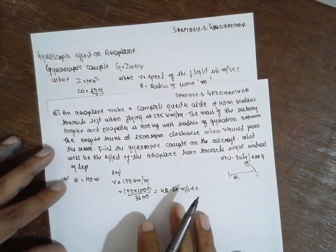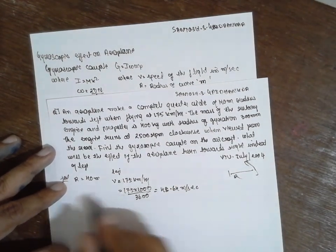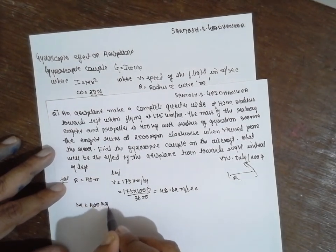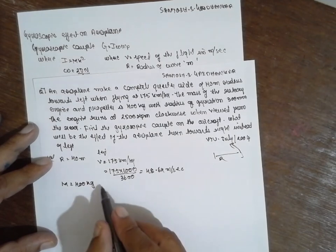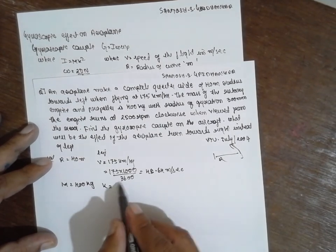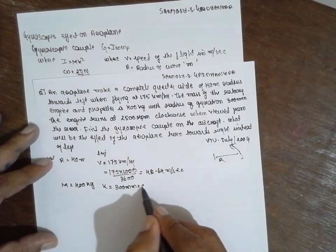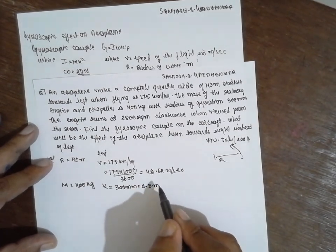Now further, the mass of rotary engine, mass they are given at 400 kg. Radius of gyration K they are given at 300 mm. That means converting to meter it will be 0.3 meter.